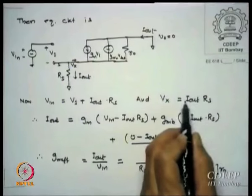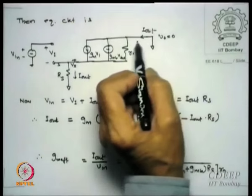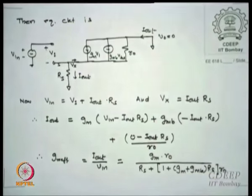Looking at the expression for Gm_effective: if Rs is not very large — even a few kilo-ohms — the term (Gm + Gmb)·Rs is of order 10. That denominator becomes roughly 10 times R0. After Rs·R0 cancels and neglecting Gmb compared to Gm, we get Gm_effective ≈ 1/Rs. This is very important: the value of Rs essentially decides the gain. Gm_effective is no longer a strong function of Gm itself — it is only a function of the source degeneration resistance.